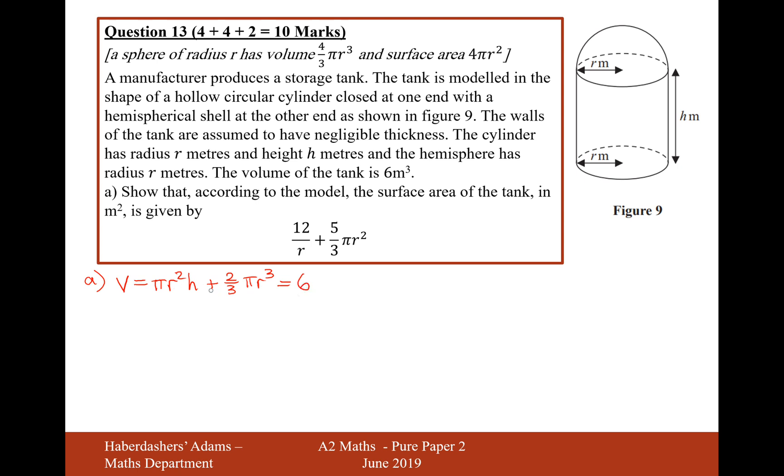Now we need to rearrange this formula to get it in terms of h. The first thing I'll do is times everything by 3 to get rid of that fraction. So it's 2 pi r cubed equals 18.